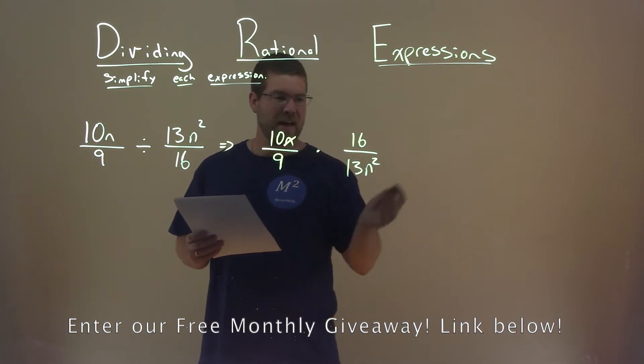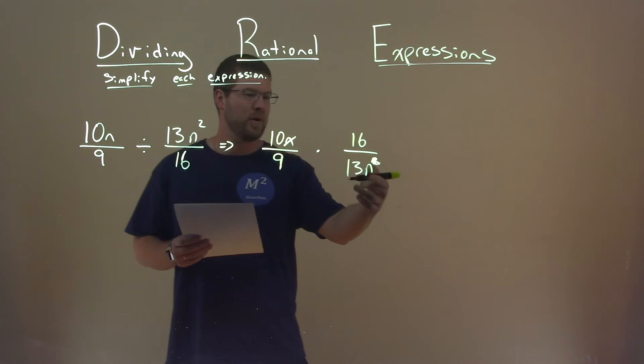The only thing I can see is, well, there's an n here and an n squared. We can get rid of the n squared and just leave it at n.